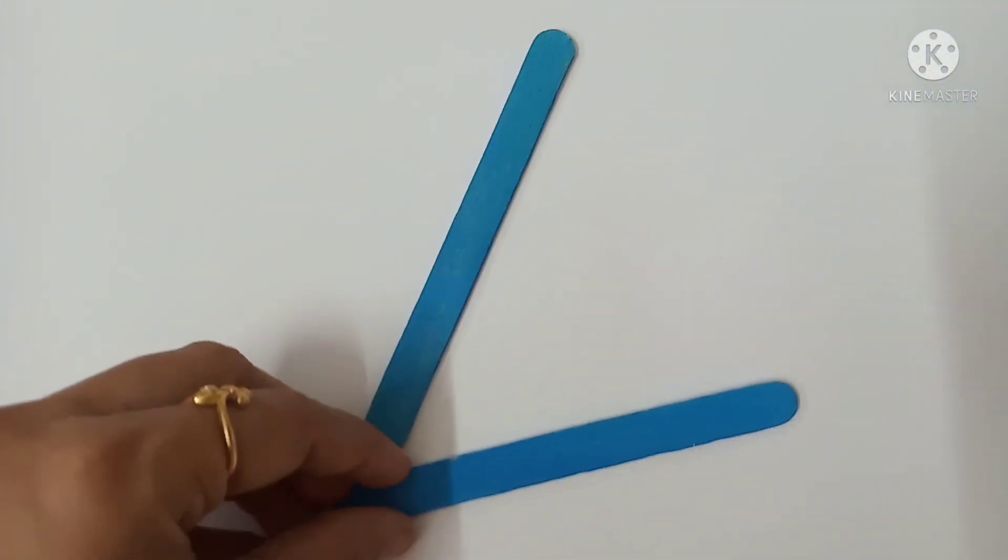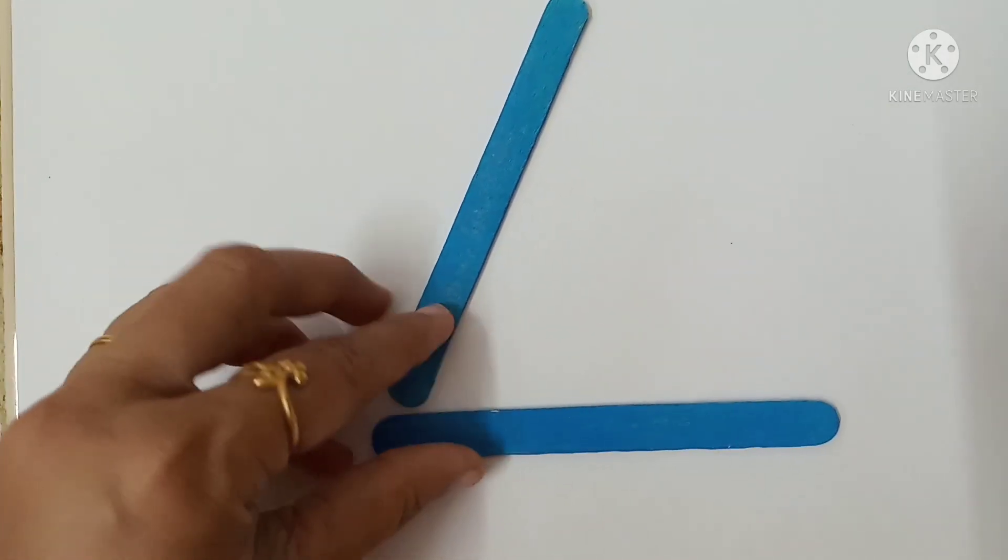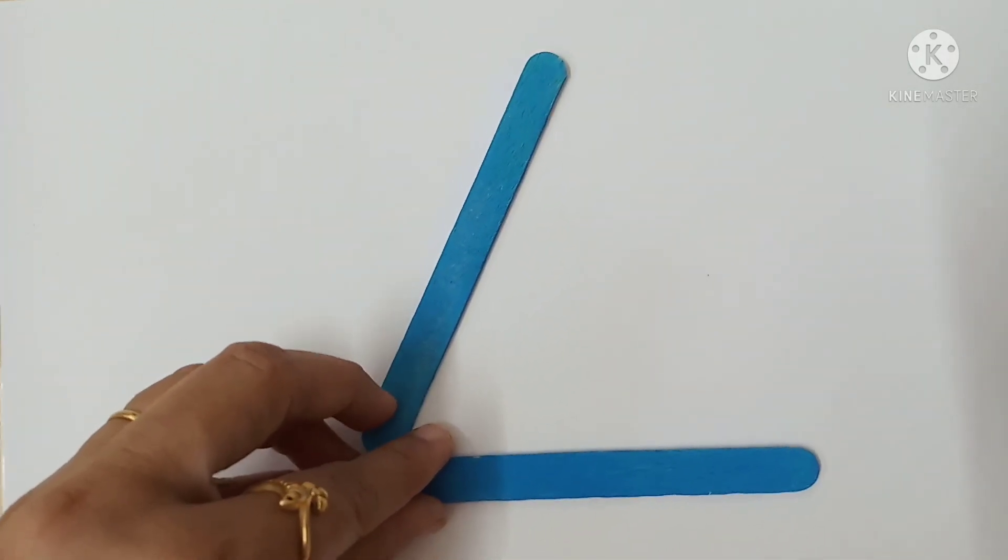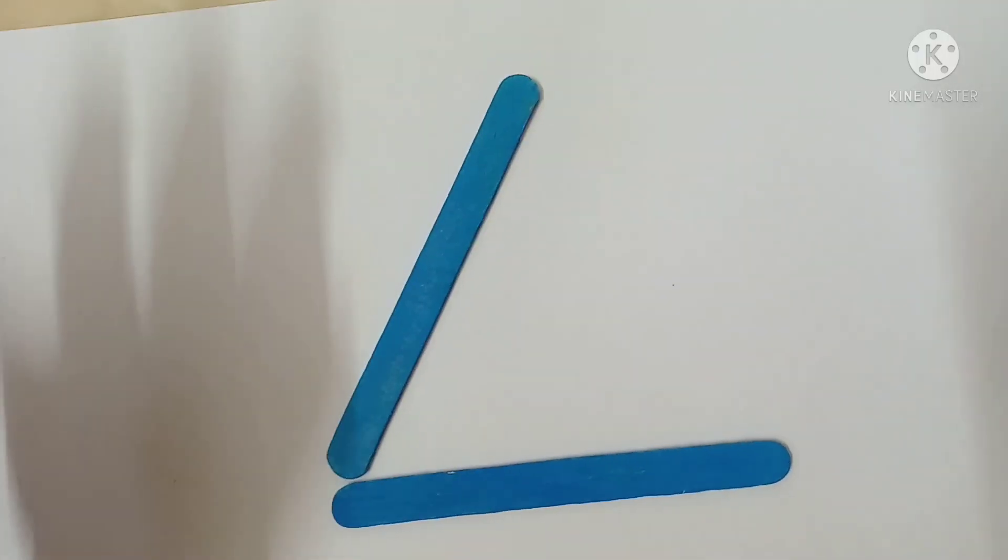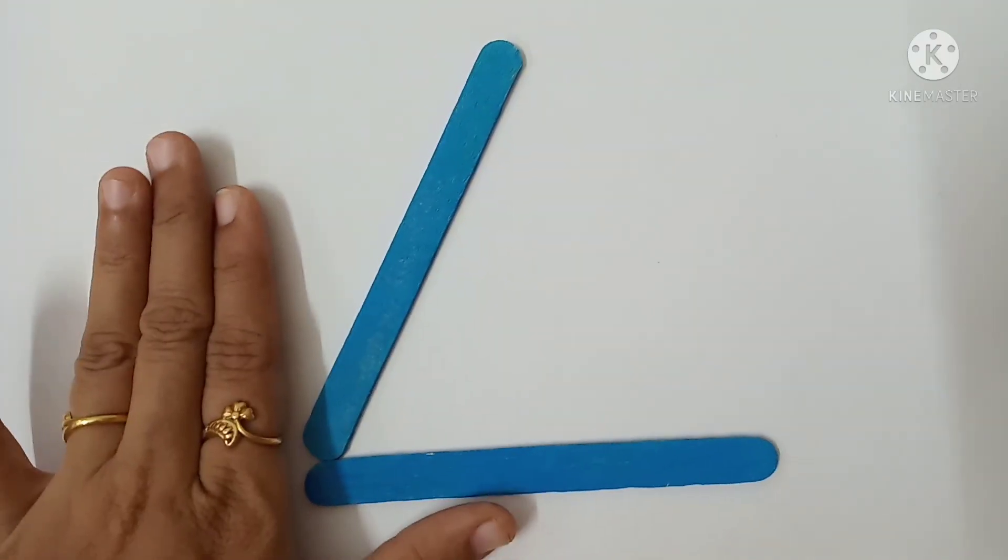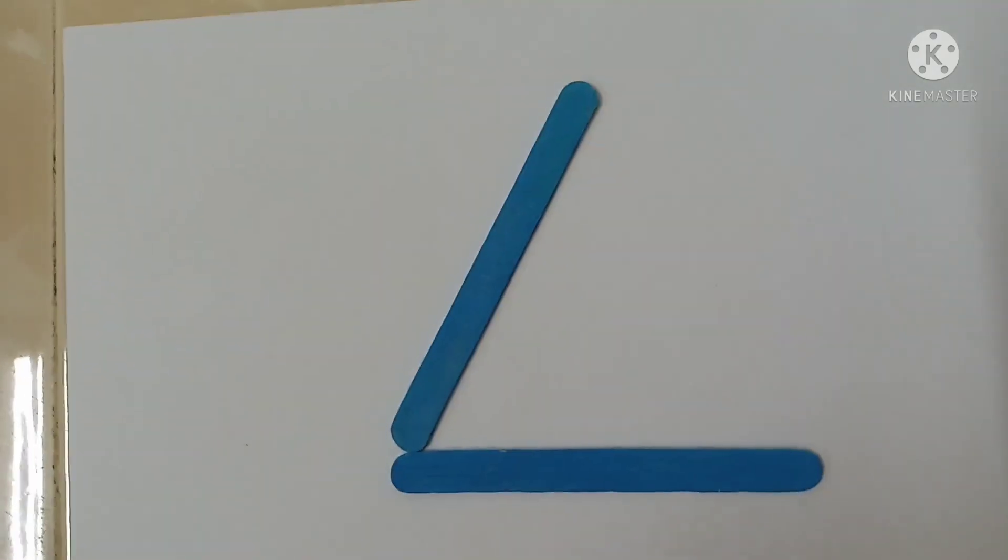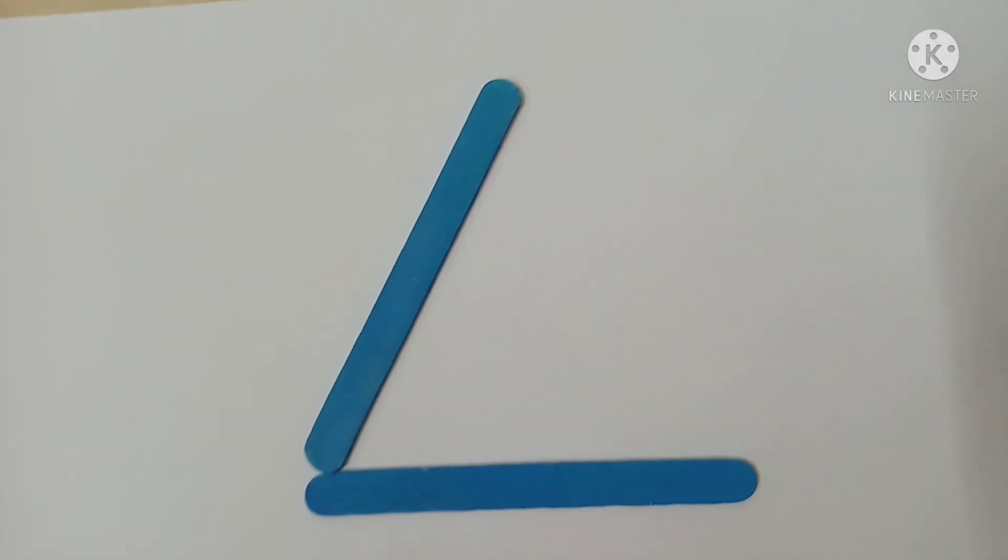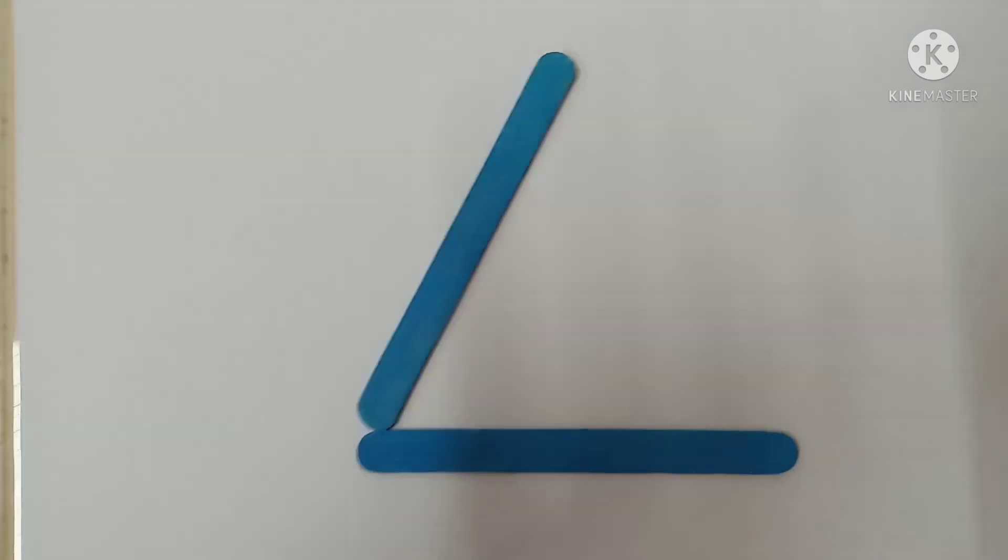Using these two sticks, I am going to make some angles here. And you have to tell me types of these angles. You have to find out which type of angle is this. Okay? With these two sticks, I will make some angles.